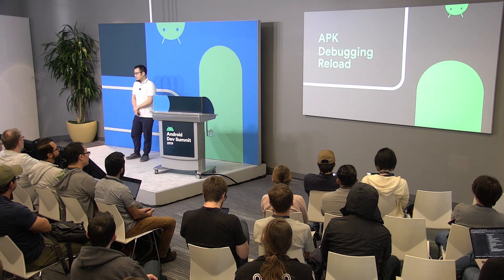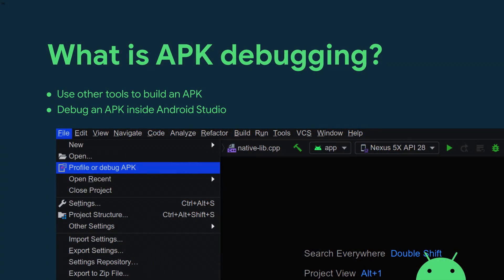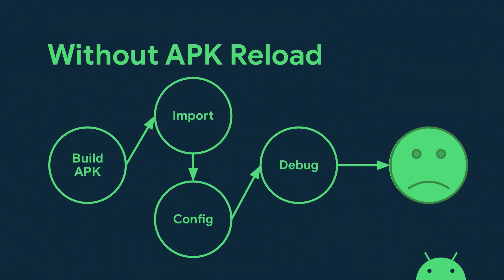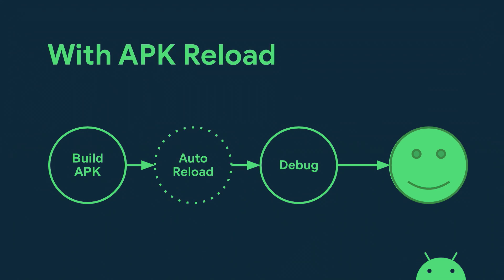One more thing I want to talk about is APK debugging reload. Some developers use tools other than Android Studio to build their apps, but still want to debug with Android Studio — and APK debugging is for them. They can open the APK directly in Android Studio and start a debugging session. Previously, every time a developer created a new build of their APK, they had to reimport it manually and reconfigure the debugging symbols and source code. Now with APK debugging reload, the IDE picks up changes to the APK on the file system automatically, so users don't have to go through that configuration process over and over again, helping them iterate much faster.